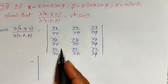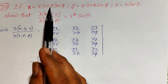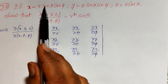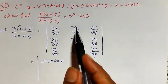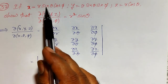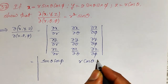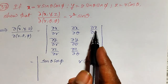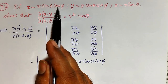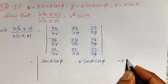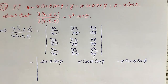Since x = r sinθ cosφ, ∂x/∂r = sinθ cosφ. For ∂x/∂θ, r and cosφ are constants and differentiation of sinθ gives cosθ, so ∂x/∂θ = r cosθ cosφ. For ∂x/∂φ, r and sinθ are constants and differentiation of cosφ gives −sinφ, so ∂x/∂φ = −r sinθ sinφ.